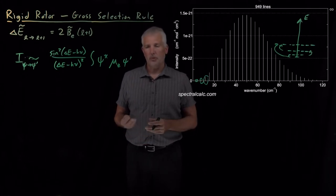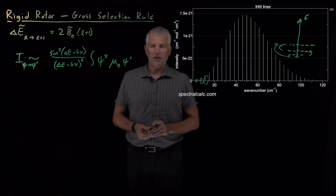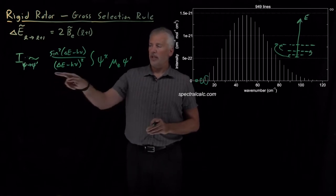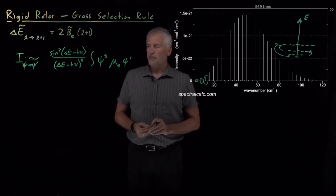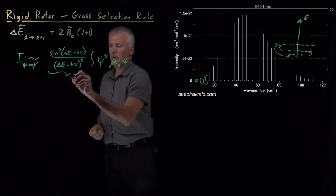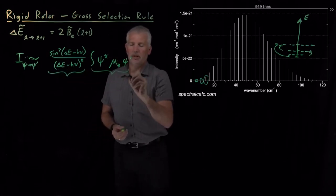Or absorbs light weakly, or perhaps doesn't absorb light at all, we need to calculate this quantity, which is composed of two portions that we'll talk about separately.